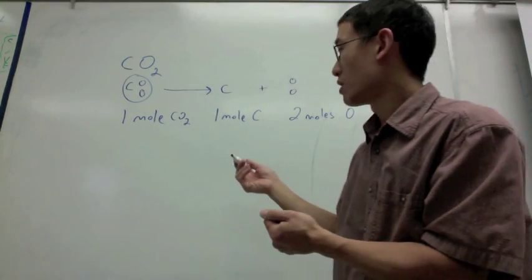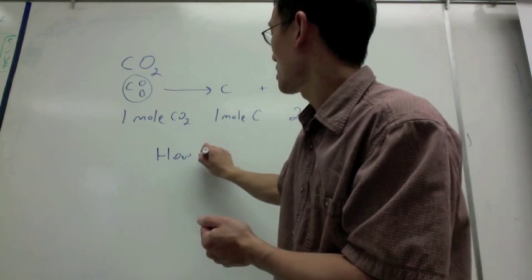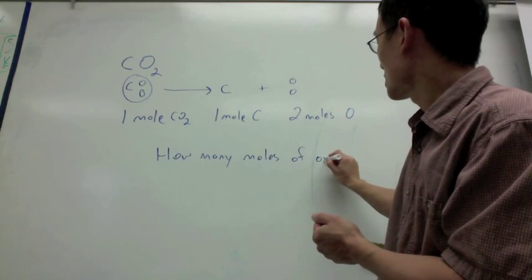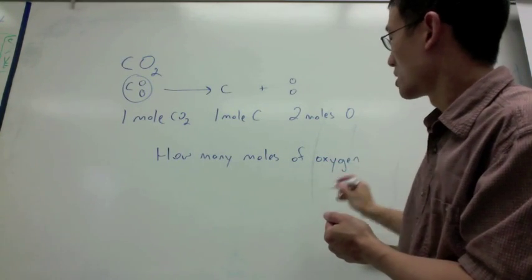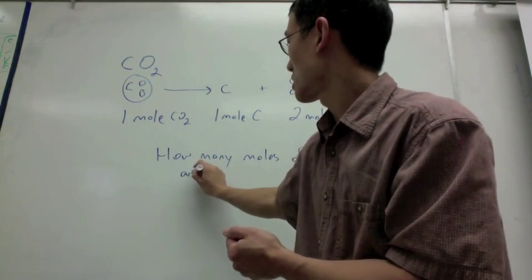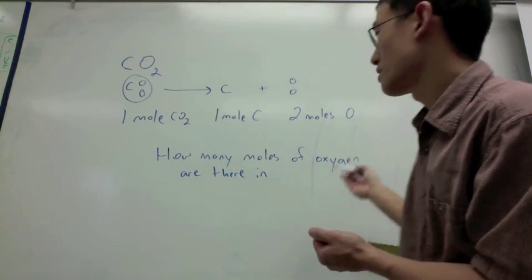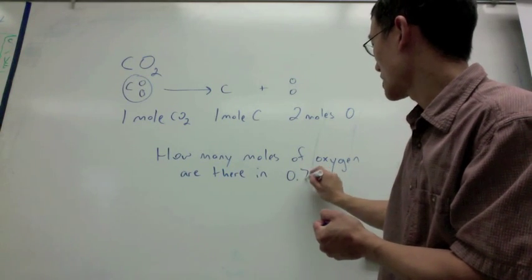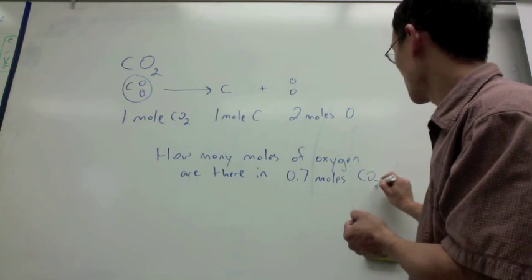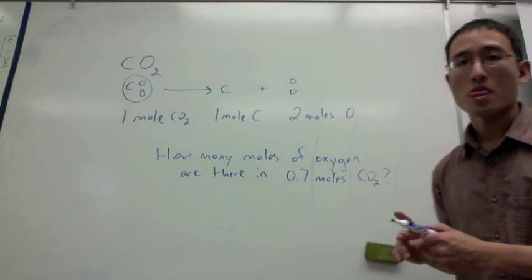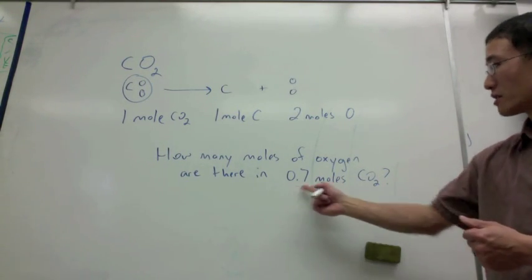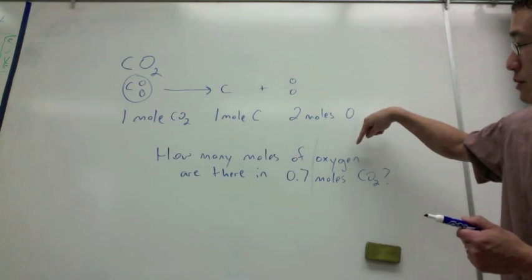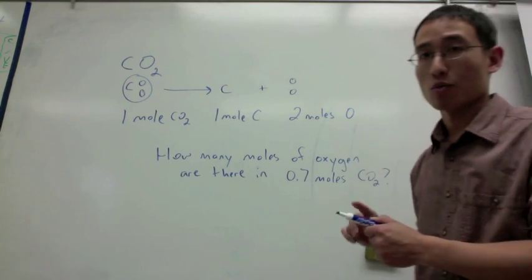How many moles of oxygen are there in, let's say, 0.7 moles of CO2? Okay, so I have a given here, 0.7 moles of CO2, and I want to figure out how many moles of oxygen, the atom, are present.